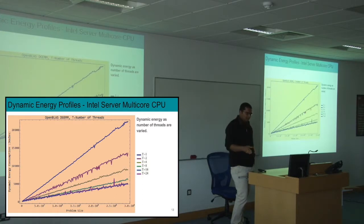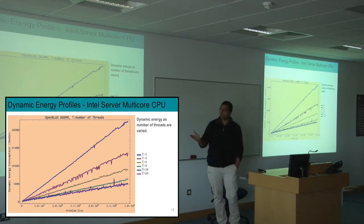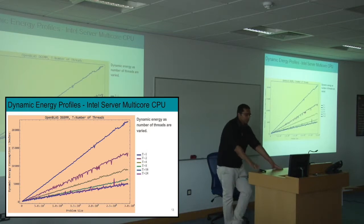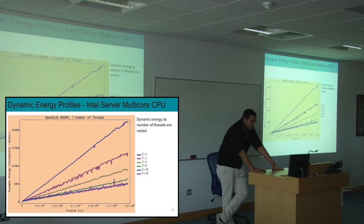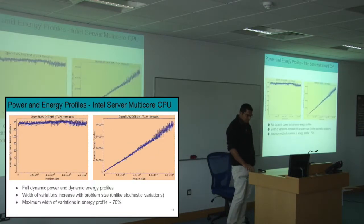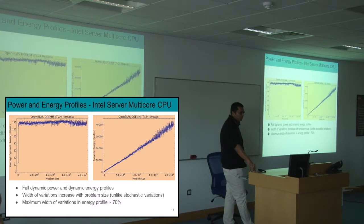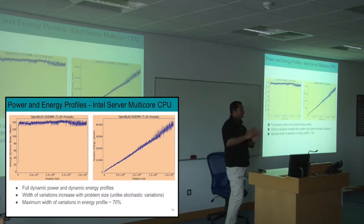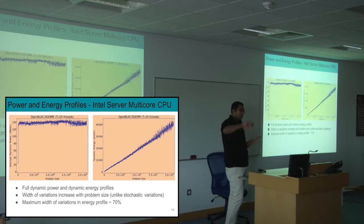This is dynamic energy as the number of threads varies. The energy reduces with multi-threading. But remarkably, for T equals two, even with just two threads, the variations start. And when you go to T16 — 16 threads — and T24, there's not much to choose between them, and T24 has a lot of variations. The width of the dynamic energy profile is increasing with problem size, which suggests these are not stochastic variations. These are deterministic variations — the maximum width in energy profile is almost 70% for this application.